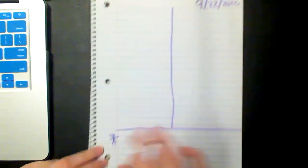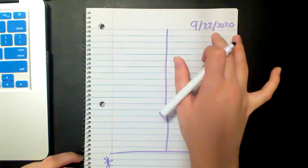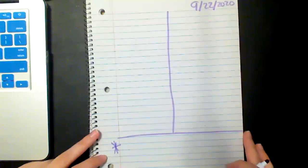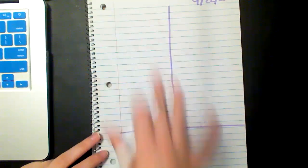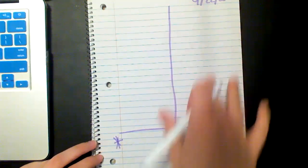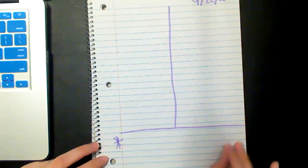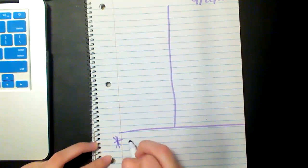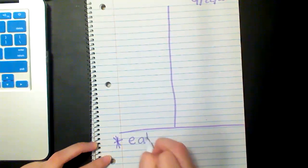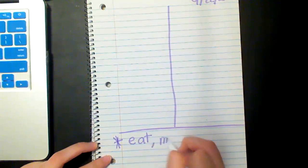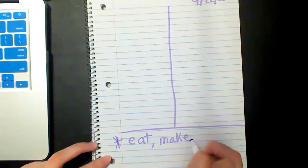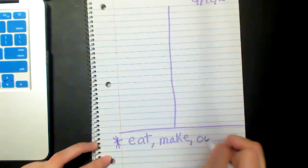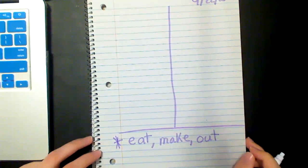So vocabulary, frequency words, date. Now we always do at least four vocabulary words and draw four pictures with four definitions and then we do at least three frequency words. So let's go ahead and start with frequency words. So our first frequency word is eat, make, and out. Those are our three frequency words from the book.